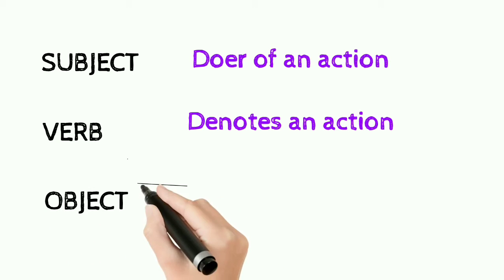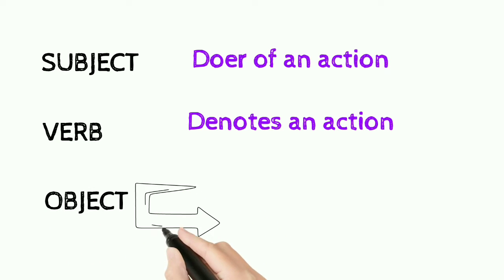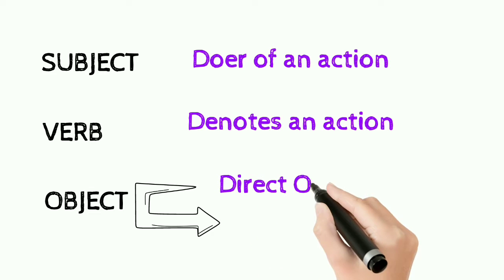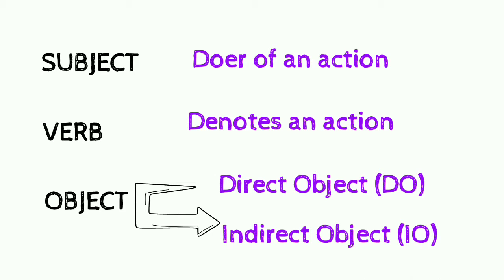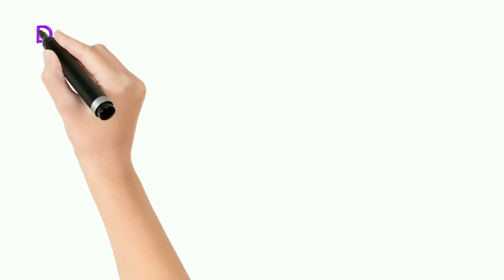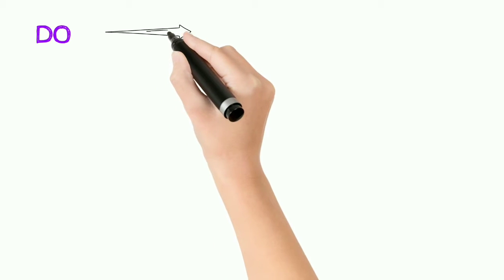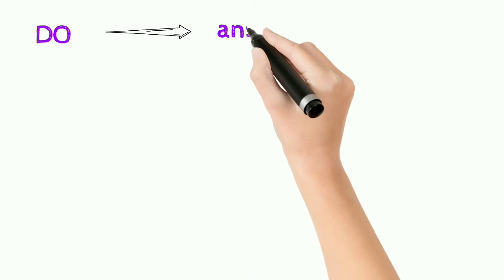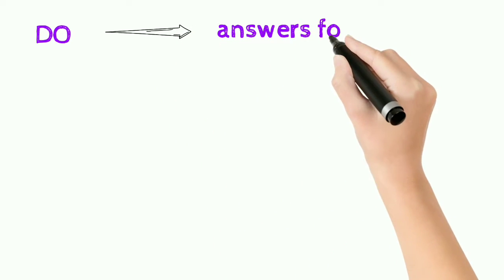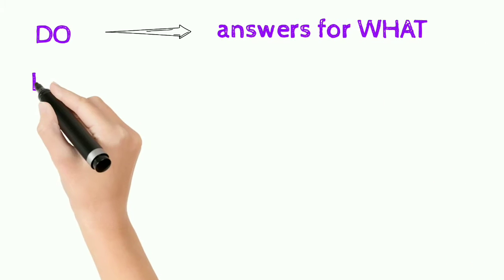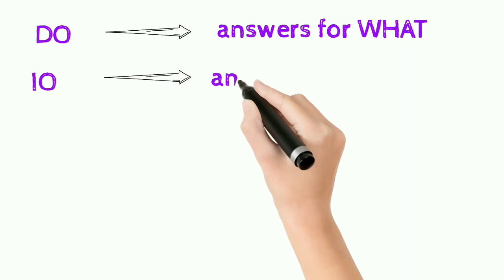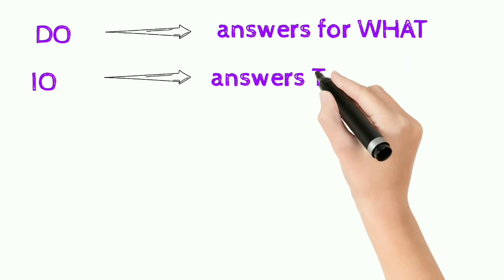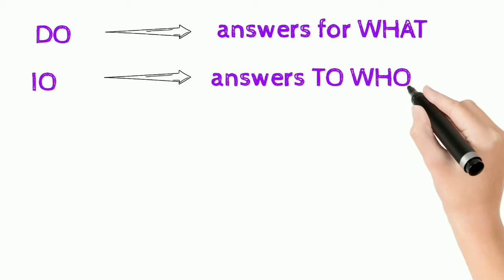Object can be divided into two types: the first one is direct object (D.O.) and another one is indirect object (I.O.). Direct object answers the question 'what.' If we get the answer for the question 'what,' that is the direct object. Indirect object answers the question 'to whom.' If we get the answer for 'to whom,' that is the indirect object.